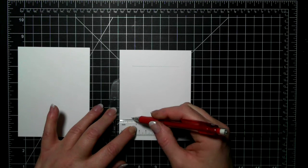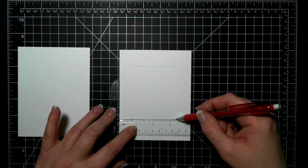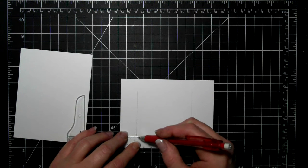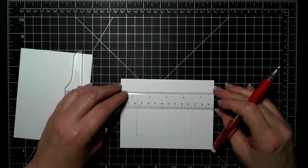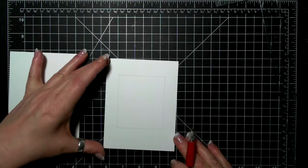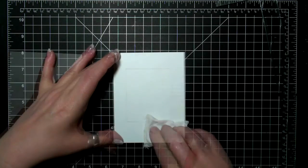It is amazing. So Stampin' Up! does not sell it. You'll find it in your local art store and as you can see here what I'm doing is just making a pencil line. I'm drawing a rectangle on my card front and I'm just playing with my markers.